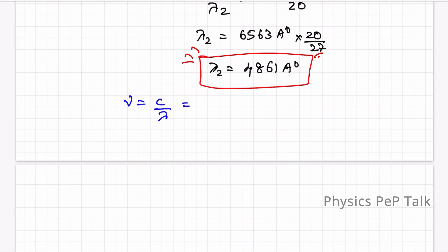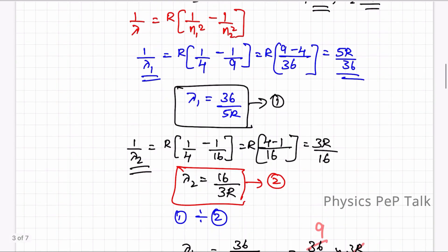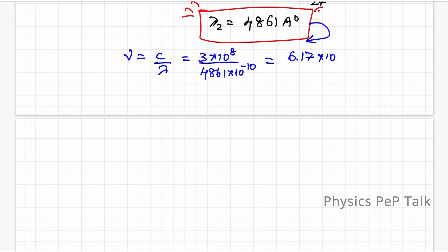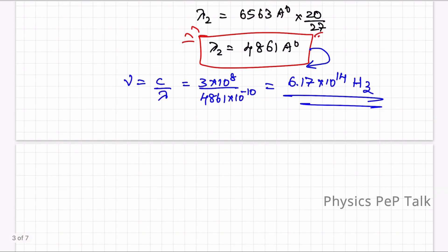Now for the frequency, we are given c = 3 × 10⁸ m/s. Using frequency ν = c/λ, and substituting λ2 = 4861 Å = 4861 × 10⁻¹⁰ m, we get ν = 3 × 10⁸ / (4861 × 10⁻¹⁰) = 6.17 × 10¹⁴ Hz. So we now have both the wavelength and frequency of the second member of the Balmer series.